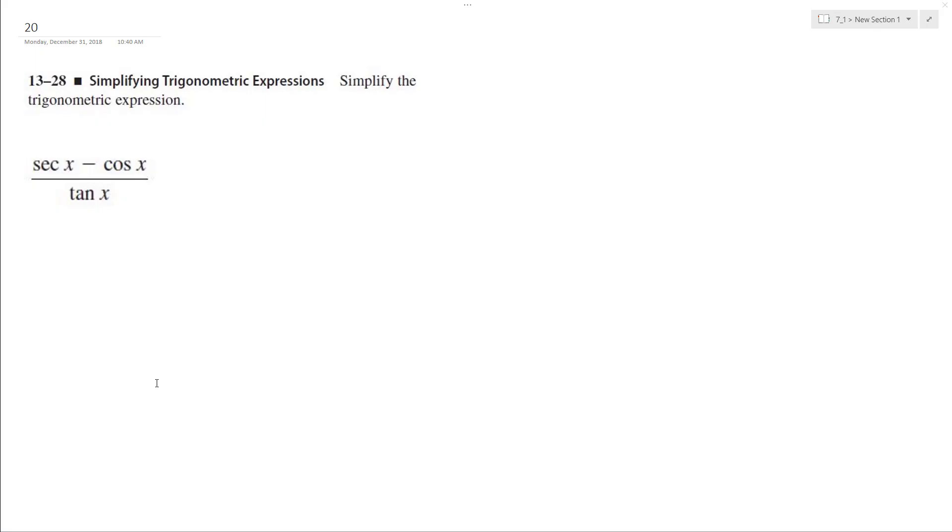Let's simplify the following trig expression as much as possible. So to do that, I'm going to rewrite this as 1 over cosine x minus cosine x over sine x over cosine x.